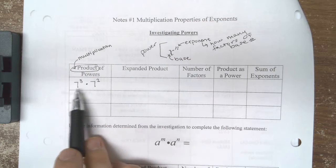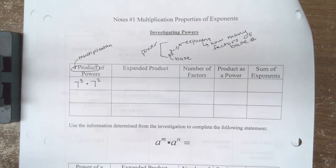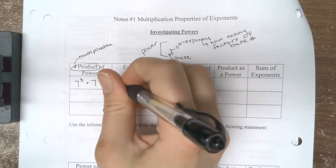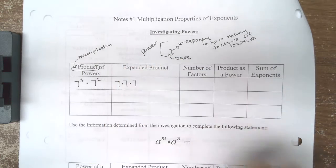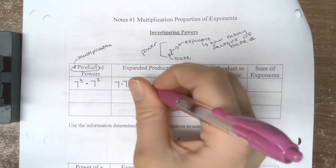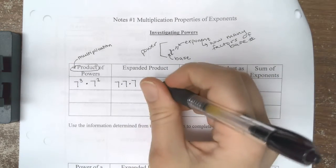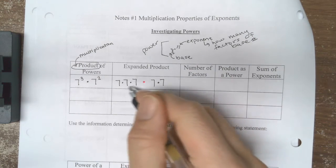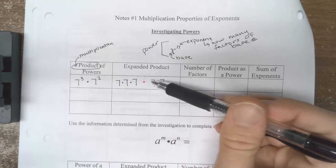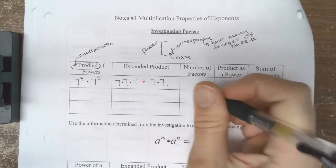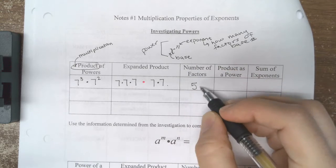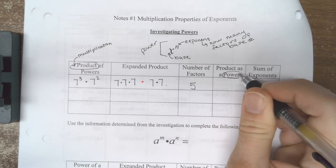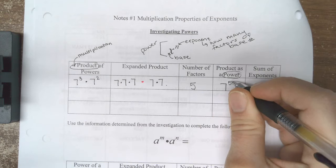In other words, when I take a power of the same base and multiply it by another power, notice my base is the same. It's 7 cubed times 7 squared. If I were to expand what's happening here, 7 cubed means I have three factors of 7, right? 7 times 7 times 7. And 7 squared means I have two factors of 7. So if I look at that all together, how many factors of 7 do I have? I have 5.